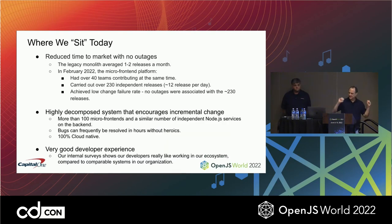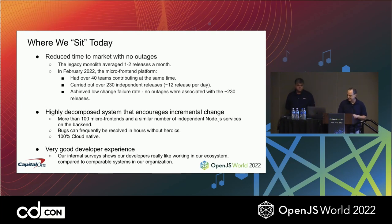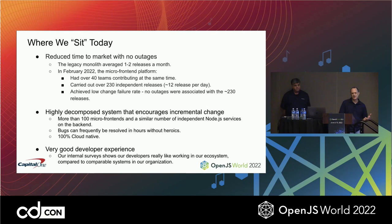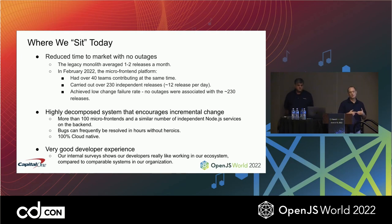So where do we sit today? We have reduced time to market with no outages. In February 2022, we delivered 12 times a day with over 40 teams contributing concurrently, and had no outages related to any of the changes. The system has more than 100 micro frontends and a similar number of microservices on the back end. We can usually resolve bugs in hours that used to take weeks. We're 100% cloud native. And one of the things we're most proud of is our developer experience — our developers like working with our system about twice as much as they like working with comparable systems at Capital One.